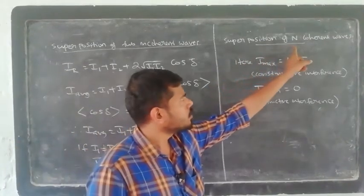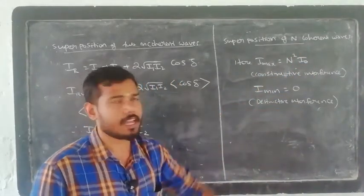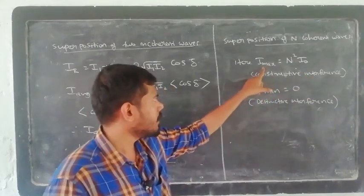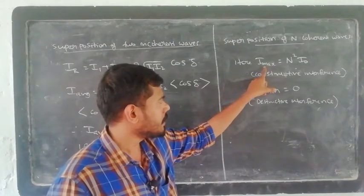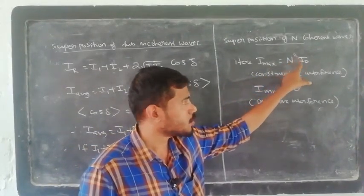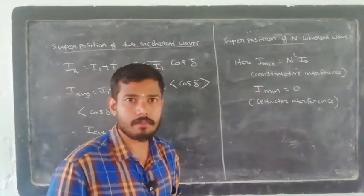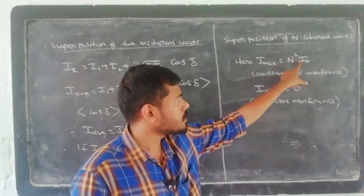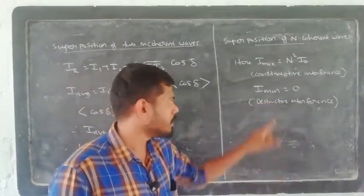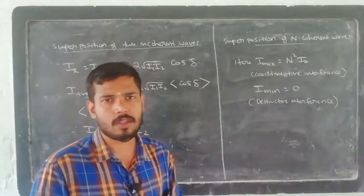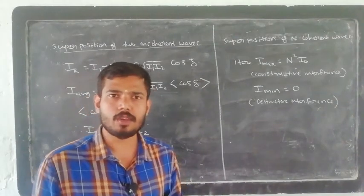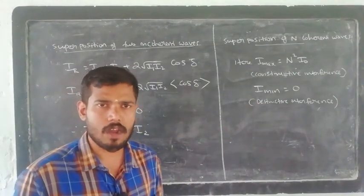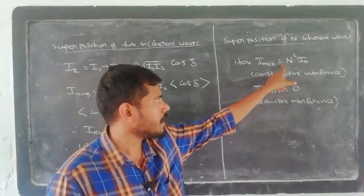When two coherent light waves overlap, we get constructive and destructive interference. The maximum intensity is 4i0, which equals (2)²·i0. When n coherent light waves overlap, the maximum intensity is n²·i0, and the minimum intensity is 0. The pattern follows a cosine-square function.